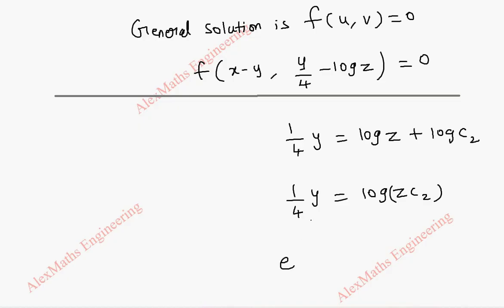Now when I remove log, the other side becomes e power y by 4. And here log will get removed, so z into c2.